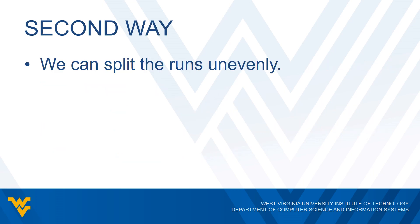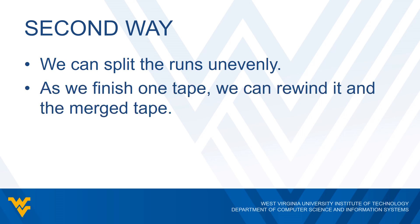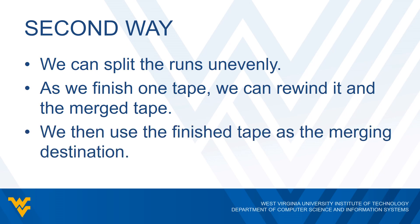The second approach is to split the runs unevenly. As we finish one tape, we rewind that tape and also rewind the merge tape, then use the finished tape as the merging destination. As we clean up one tape, we have one tape spare and use it as a destination for the remaining merges. We rewind the merge tape, start from there, and merge our sorted merge tape with the tape that hasn't completed its merging. The second tape then gets freed up, so we rewind that tape with the other merge tape and keep repeating this until everything is sorted.